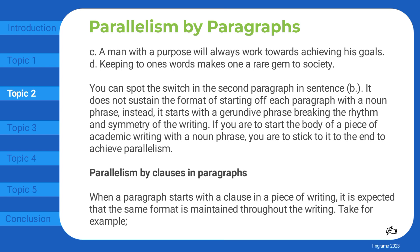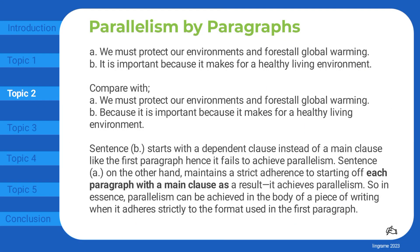Parallelism by clauses in paragraphs. When a paragraph starts with a clause in a piece of writing, it is expected that the same format is maintained throughout the writing. Take for example: 'We must protect our environments and forestall global warming. It is important because it makes for a healthy living environment.' Compare with: 'We must protect our environments and forestall global warming. Because it is important. Because it makes for a healthy living environment.' Sentence B starts with a dependent clause instead of a main clause like the first paragraph, hence it fails to achieve parallelism. Sentence A, on the other hand, maintains a strict adherence to starting off each paragraph with a main clause; as a result, it achieves parallelism.